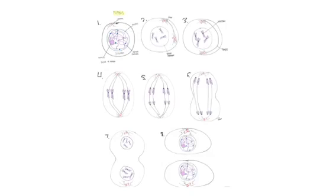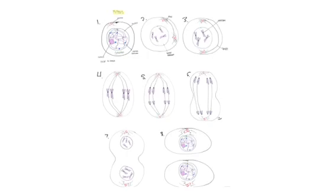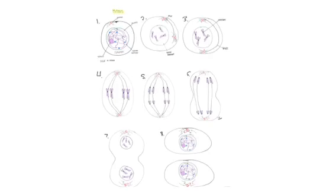In early prophase, the centrioles divide and with the asters move apart. The nuclear membrane begins to disintegrate. In late prophase, the centrioles and asters are at opposite poles and the nucleus and nuclear membrane have almost disappeared.